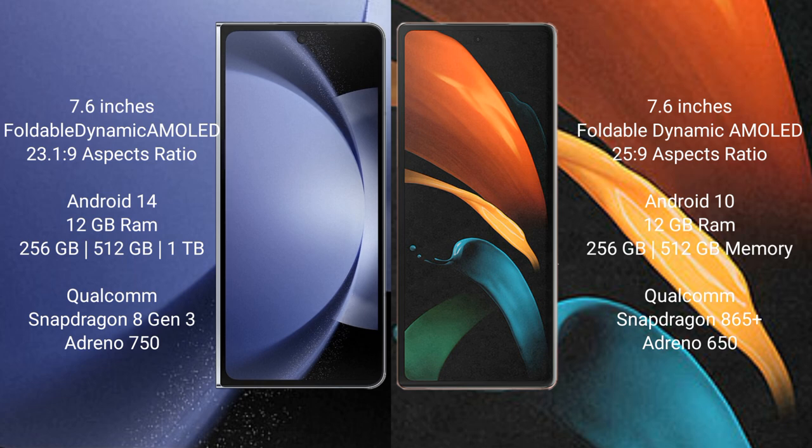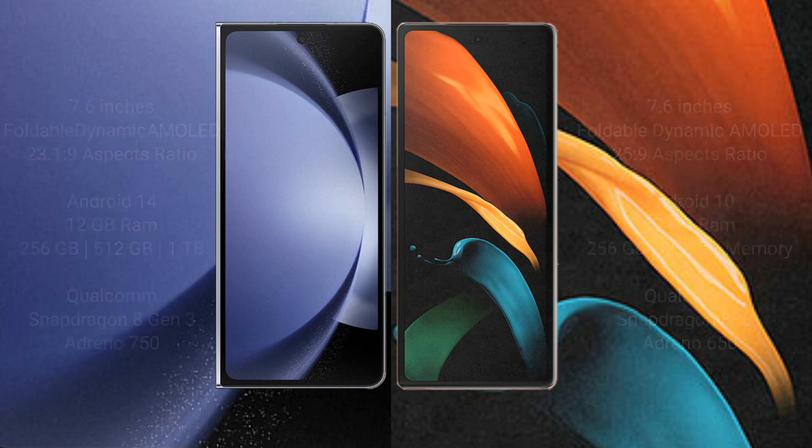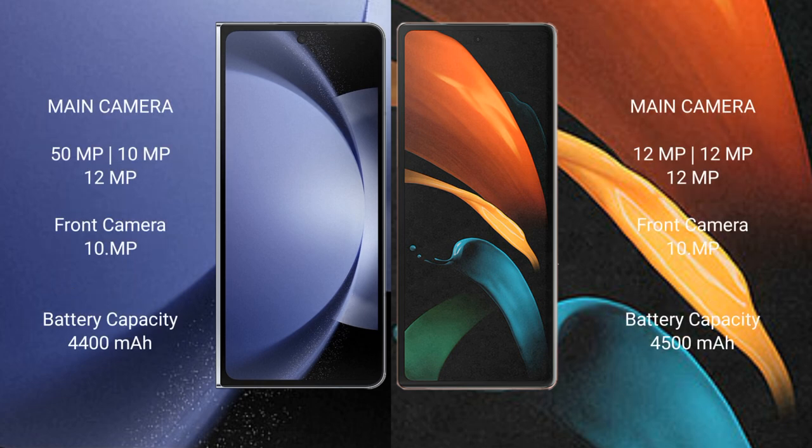The Samsung Galaxy Z Fold 6 features the Qualcomm Snapdragon 8 Gen 3 processor with an NPU-10750. The Samsung Galaxy Z Fold 2 comes with 12GB RAM and 256GB or 512GB of internal storage, powered by the Qualcomm Snapdragon 865 Plus processor with an NPU-10650.